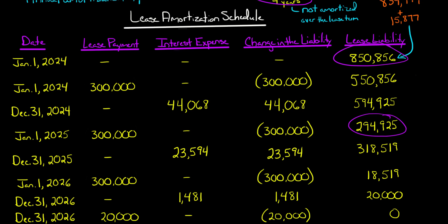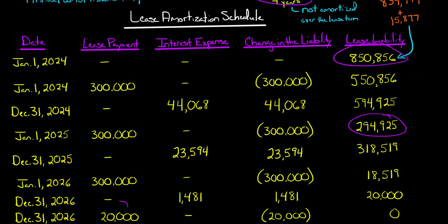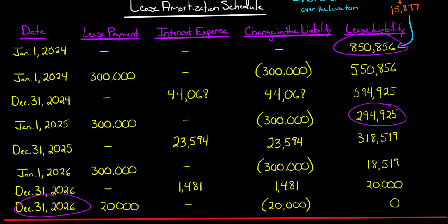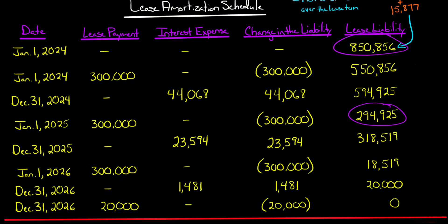If there's a situation where the lessee was going to return the asset but it wasn't going to have the guaranteed value — meaning the expected residual value is lower than the guaranteed residual value and they're expecting to make a payment to the lessor at the end — then in that case as well, you'd have the same scenario. So that final $300,000 payment takes the lease liability to $18,519. Multiply that by 8% to get the interest expense, which gets added to the lease liability bringing it up to $20,000. Then the bargain purchase option is exercised on the last day of the lease — December 31st, 2026. That final $20,000 payment takes the lease liability to zero.